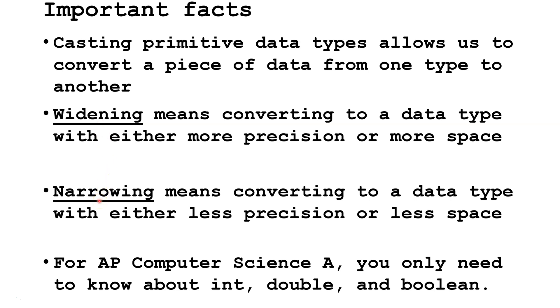Narrowing means converting to a data type with either less precision or less space. For AP Computer Science A, you only need to know about the three primitive types int, double, and boolean, but we will be covering some of the others in this lecture.